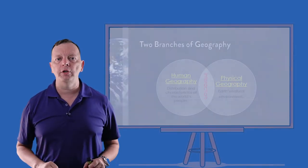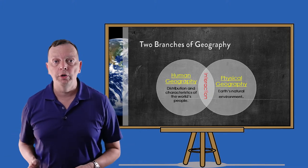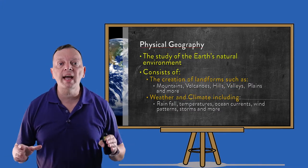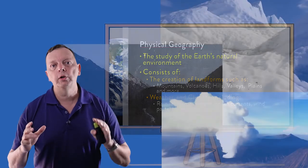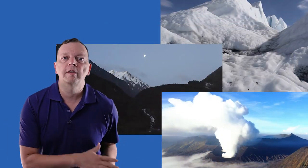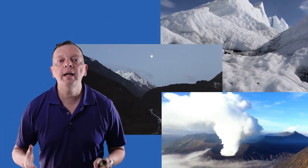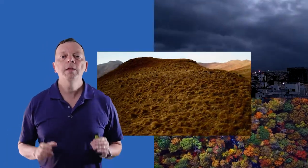Now within geography, there are two major branches: physical geography and human geography. Physical geography looks at the physical characteristics of the earth. This includes the creation of mountains, volcanoes, valleys, and other landforms. But it also looks at weather and climate, which impacts the type of vegetation and animals that are found in the world, or what we call biomes.